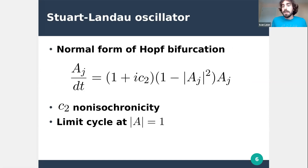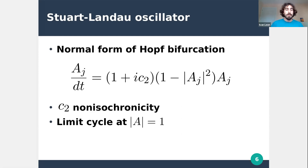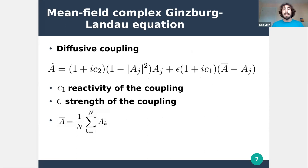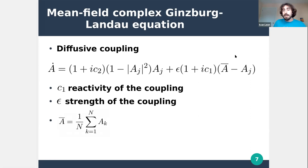We can apply quasi-phase reduction to an enormous variety of oscillators, but to avoid getting lost in notation, we apply it to the Stuart-Landau oscillator, which is the normal form of the Hopf bifurcation and a general form of oscillation. Here c2 is the non-isochronicity parameter, and this system presents a limit cycle at modulus a equal to one. We want not just one oscillator but an ensemble of them, diffusively coupled with coupling strength epsilon, reactivity c1, and mean field as defined.